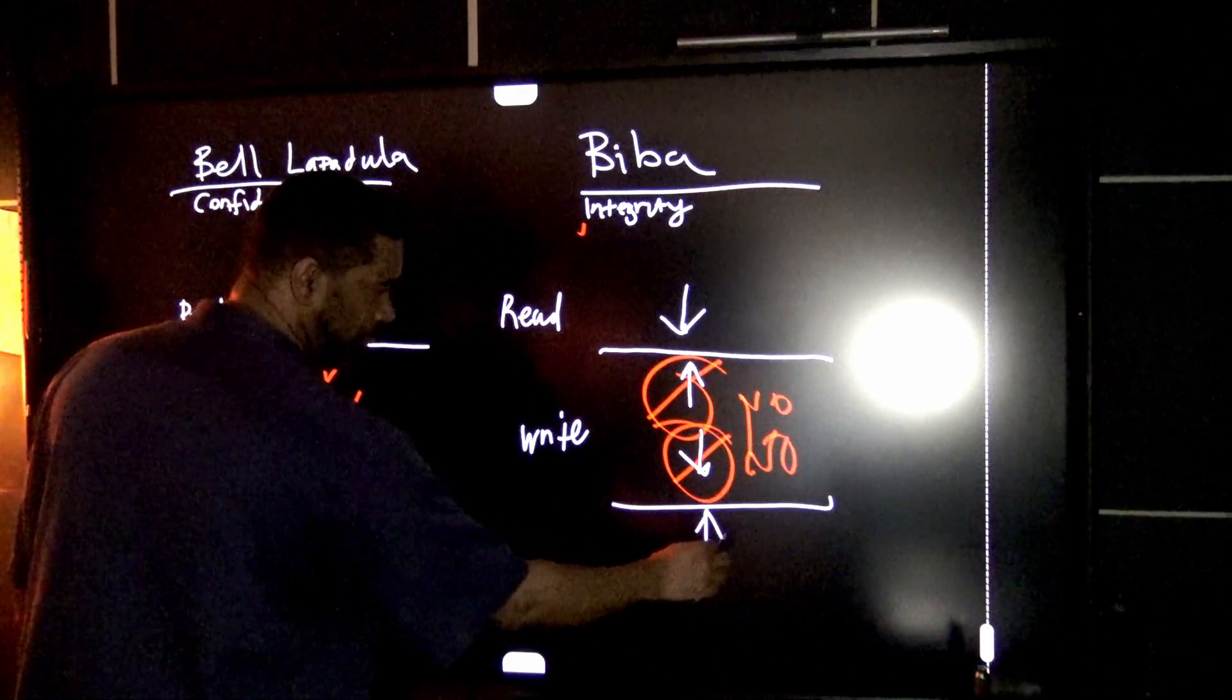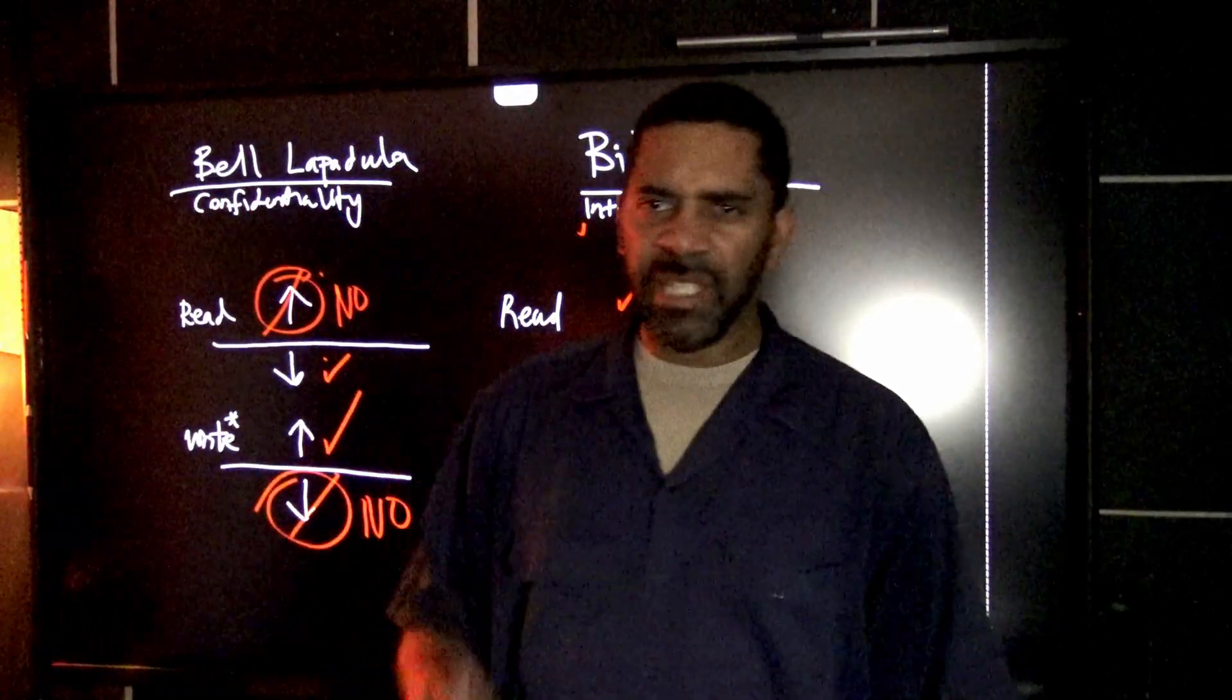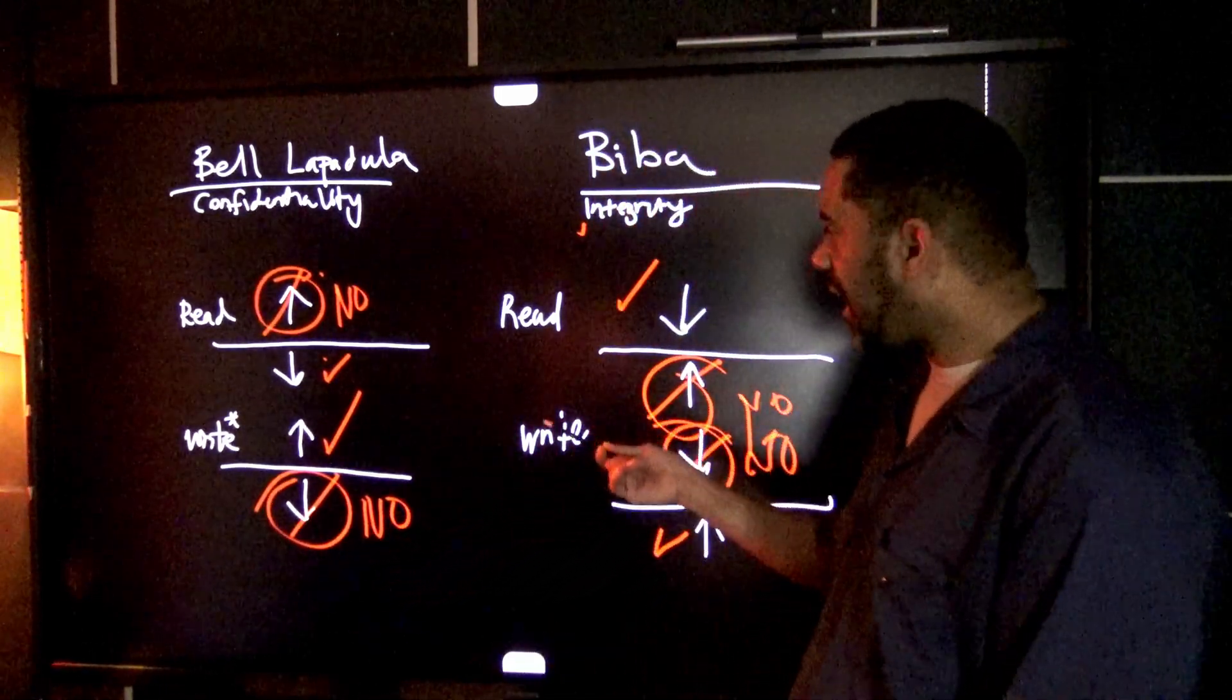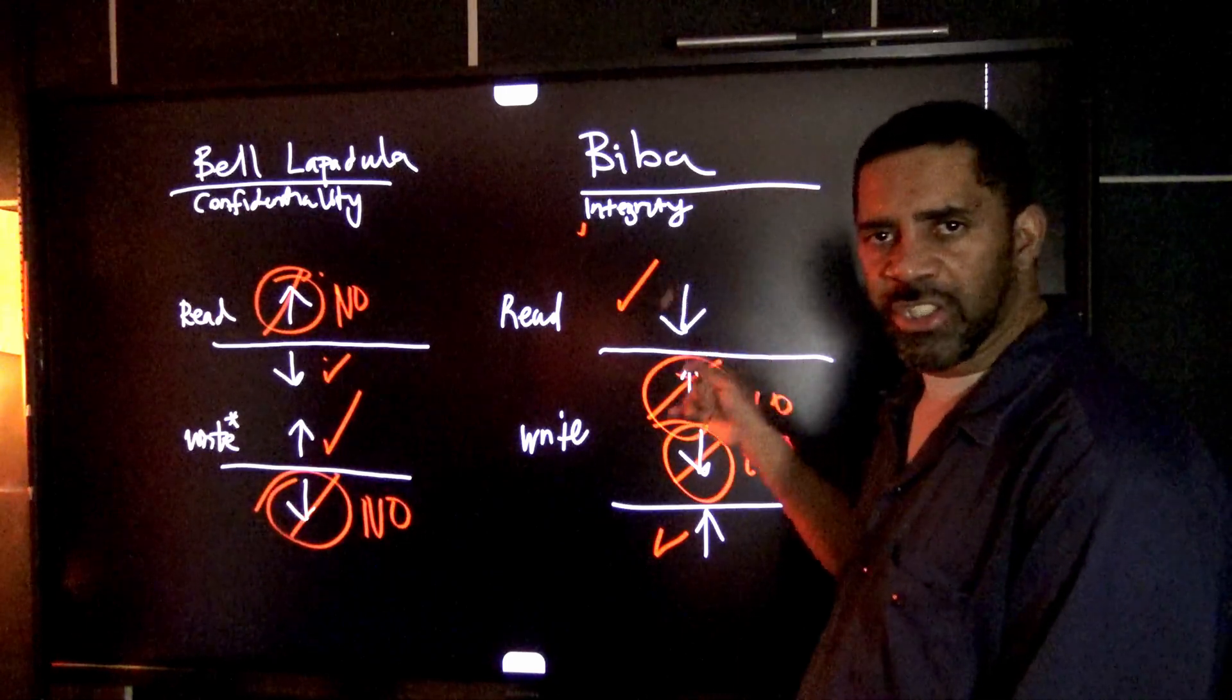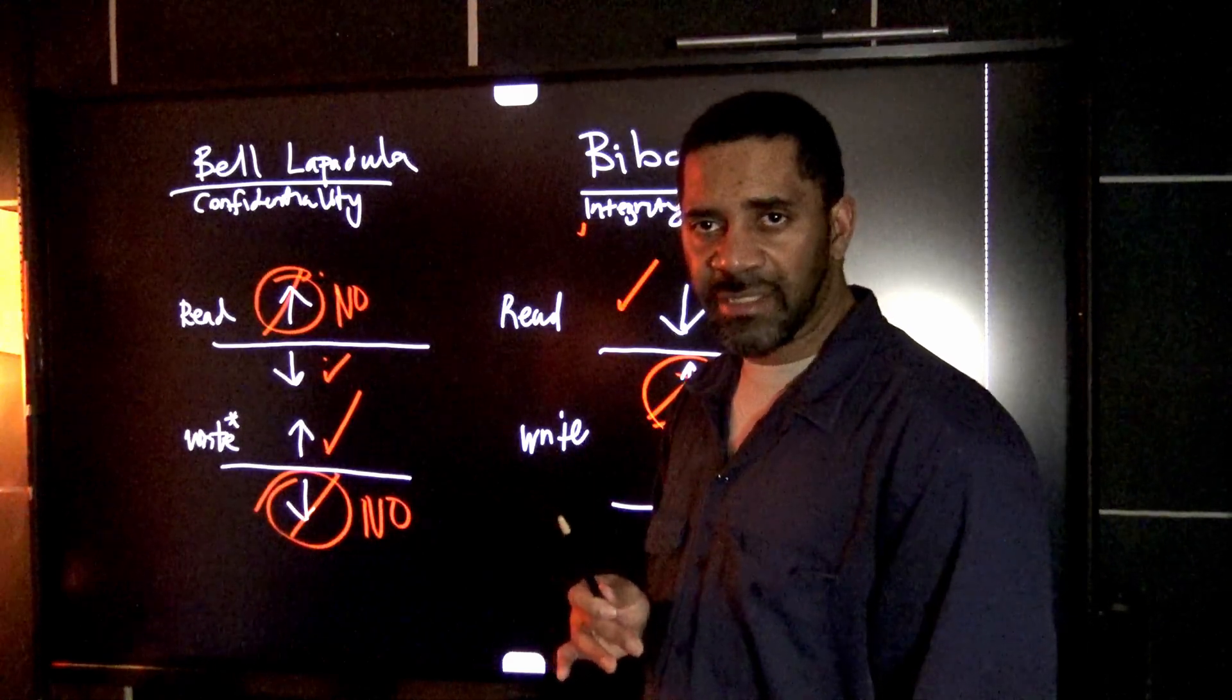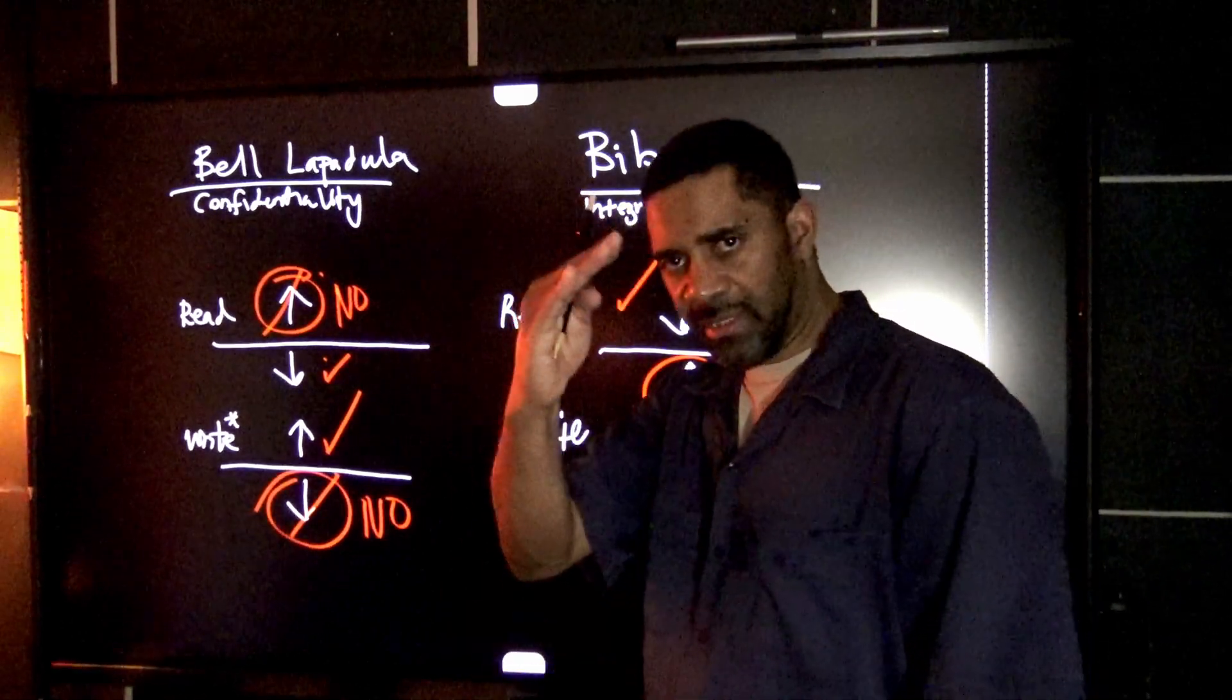So when you're taking the CISSP, if you draw this on the paper that's allowed, then you should not have any trouble acing this test. So this is the savage scientist. Until I make my next video, peace out.